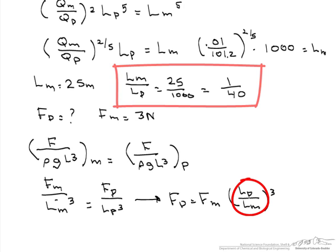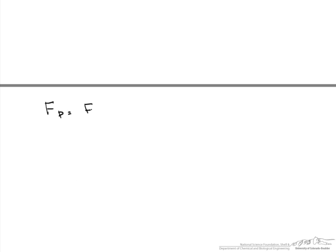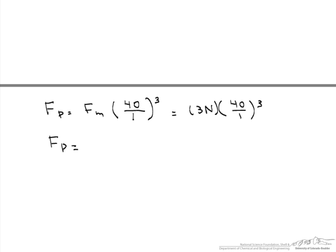Without knowing the scale, we would not have been able to relate the prototype to the model. The scaling is 40 over 1 — the inverse of 1/40 — since it is L_p over L_m, cubed. So the force on the prototype equals 3 newtons times (40)³, giving us 192,000 newtons, or 192 kilonewtons.